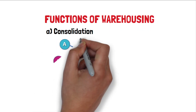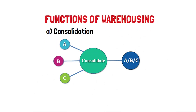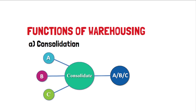Moving on to the functions of warehousing. The first function is consolidation — combining goods from different producers or companies together in one place, then sending them as a single shipment to one party or company. For example, companies A, B, and C each produce the same thing; their goods are brought to one place and then dispatched to a single consumer or company.